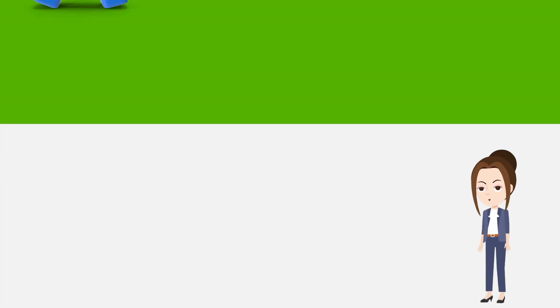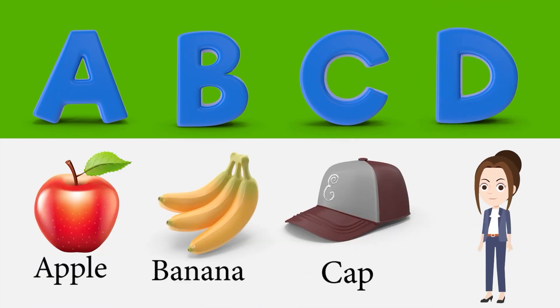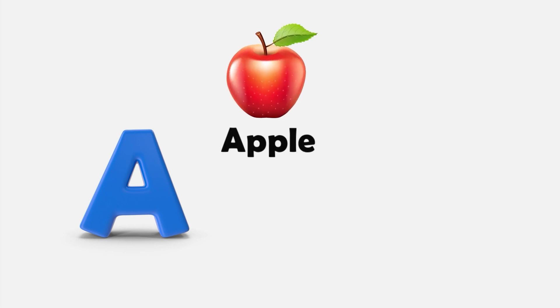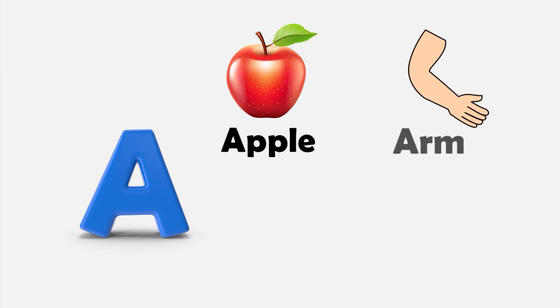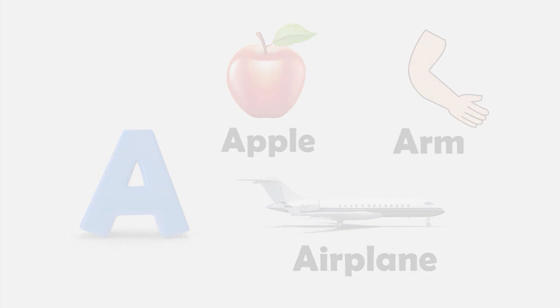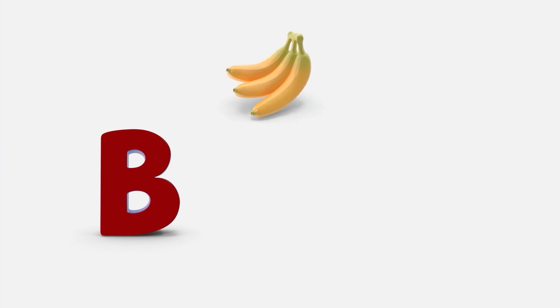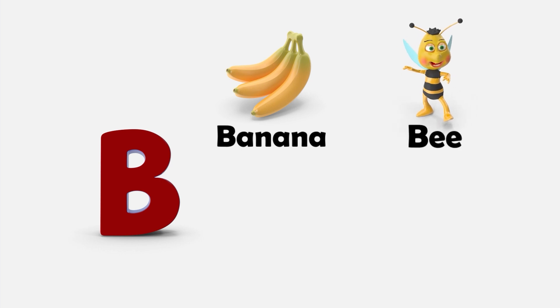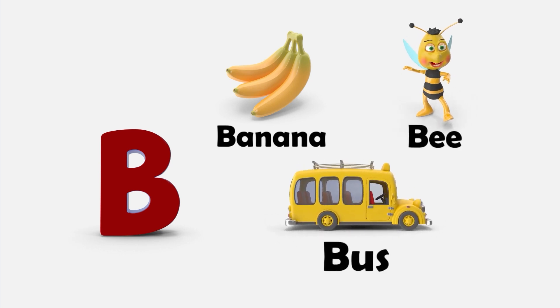Hey kids! Let's learn the alphabets. A — A is for Apple. A is for Arm. A is for Airplane. B — B is for Banana. B is for Bee. B is for Bus.